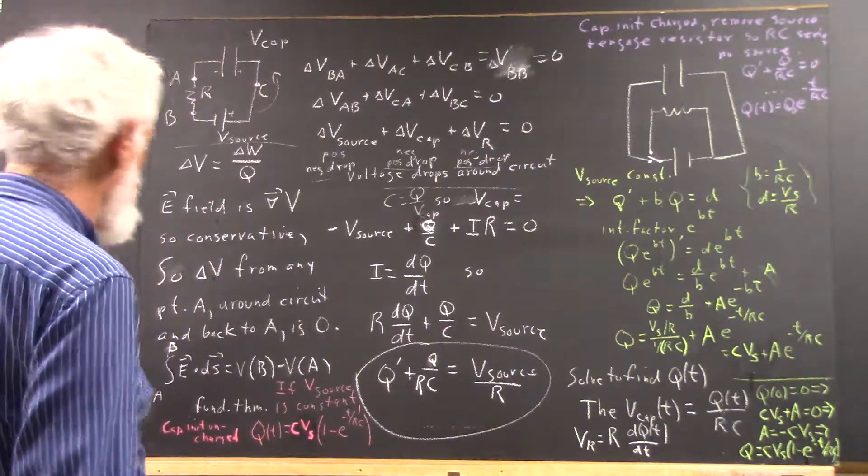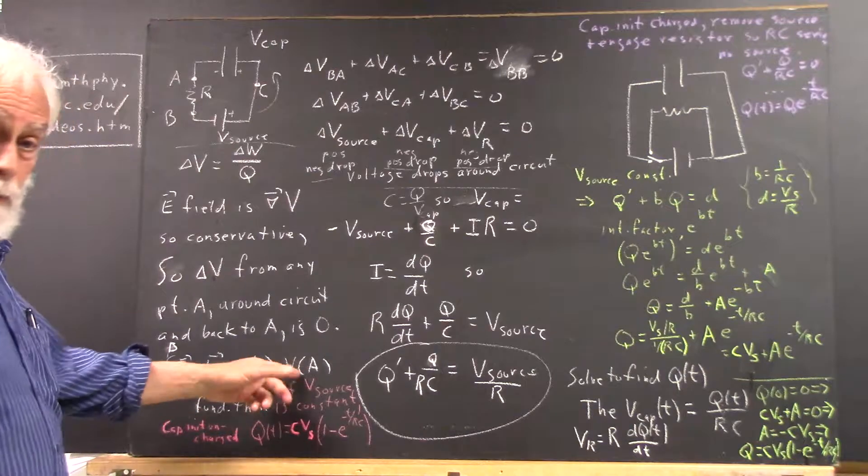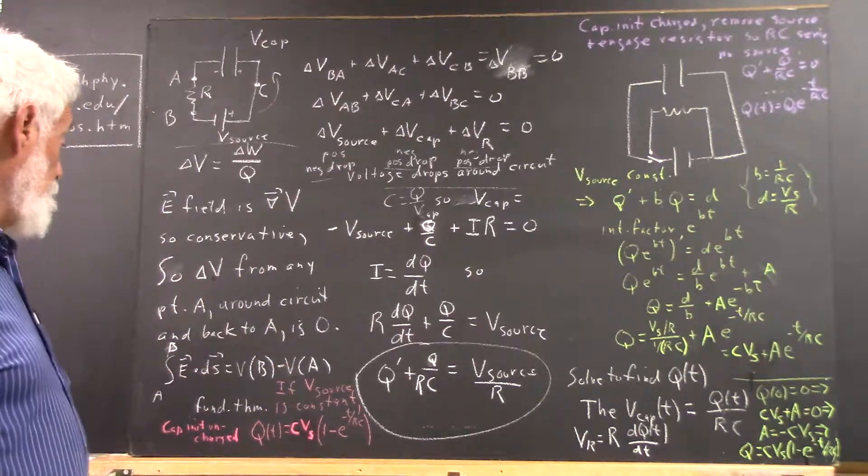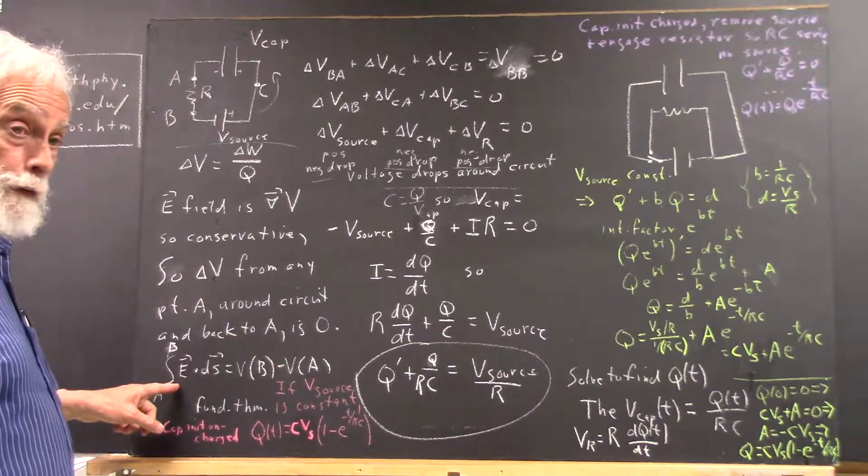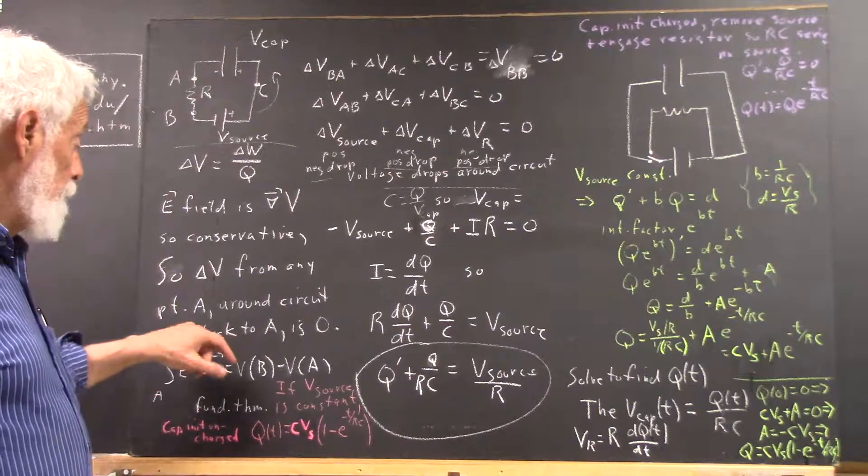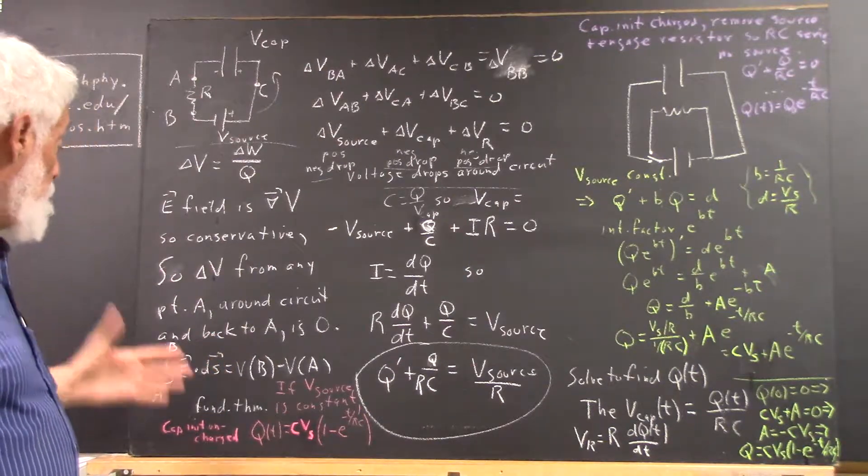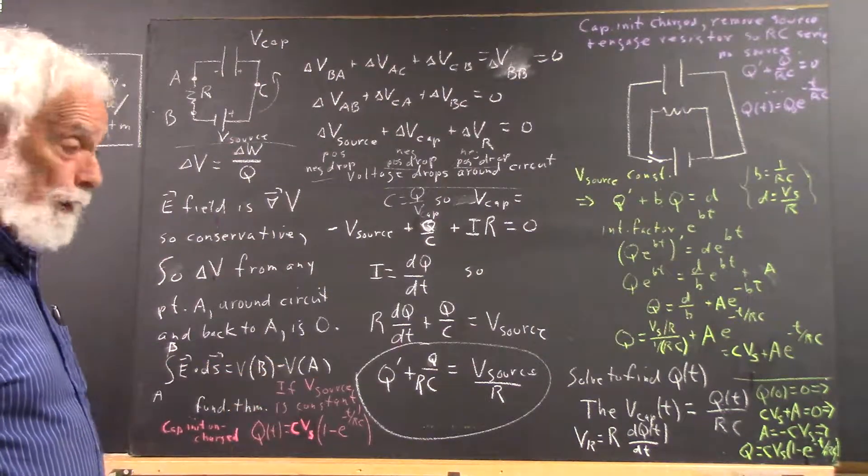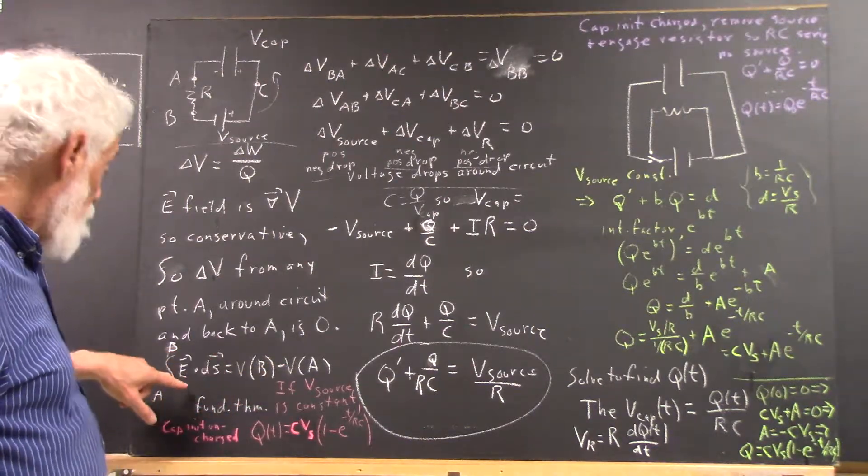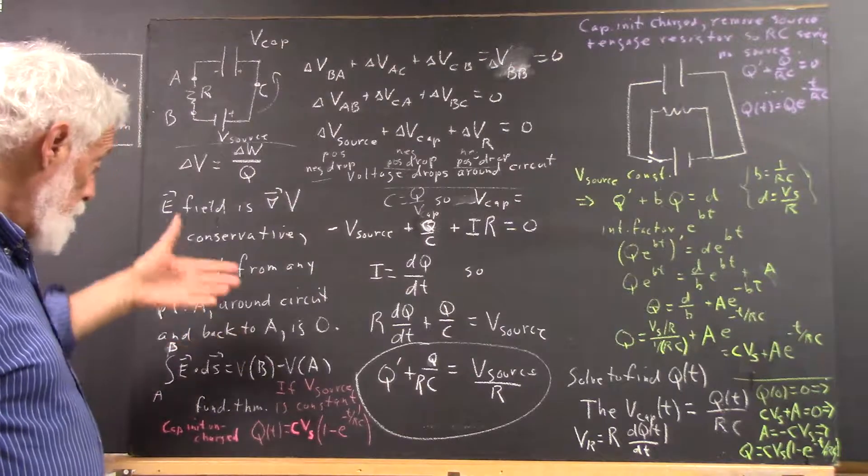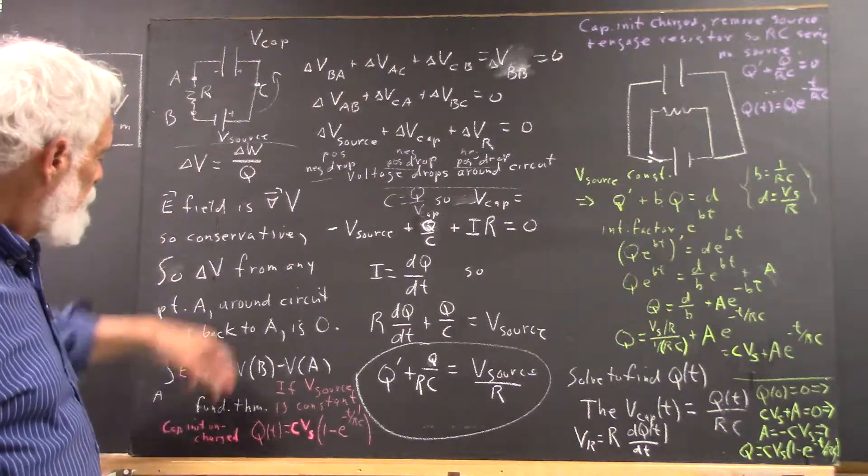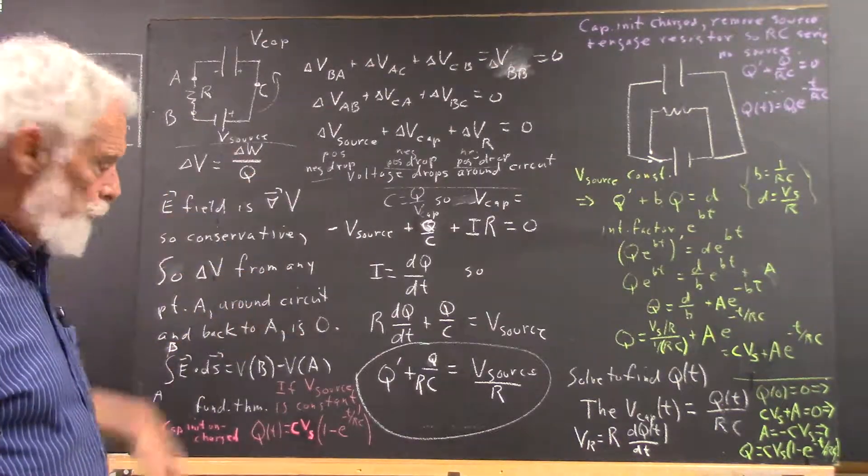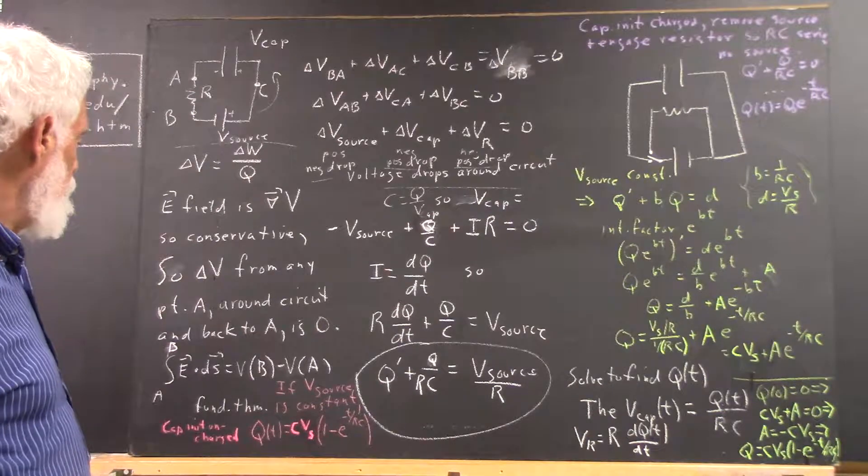We've seen by the fundamental theorem of line integrals and the fact that the electric field being the gradient of a potential function V is conservative, that we have the line integral of the electric field around any path equal to the difference in the voltages over that path.